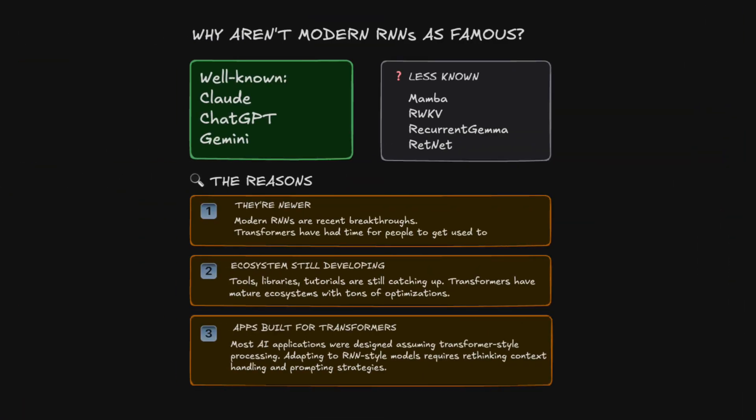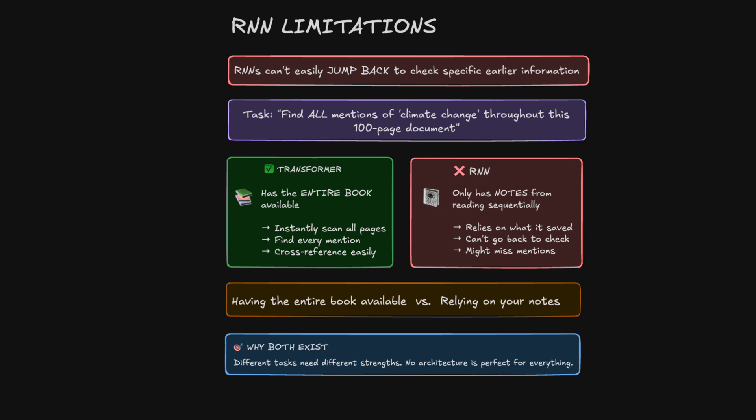RetNet models from Microsoft Research also have the unique ability to switch between parallel training and efficient RNN-style inference. Microsoft hasn't released large public RetNet models, but their architecture influenced several research projects and private deployments. So why aren't these models as well known as GPT or Claude? They're newer and the ecosystem is still developing. Most AI applications were built assuming transformer-style processing, so adapting to RNN-style models requires rethinking how you handle context and prompting. But for specific use cases like document processing or continuous monitoring, they're potentially a really good fit. The limitation of these modern RNNs explains why transformers still exist — RNNs can't easily jump back to check specific earlier information. If you need to find all mentions of a specific topic throughout a document, transformers can do this instantly, but RNNs have to rely on what they remembered to save in their state.